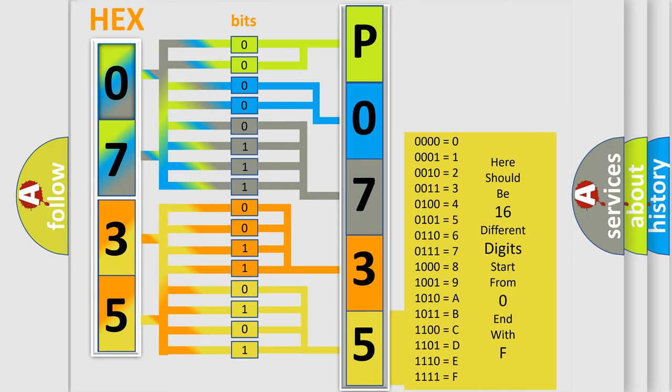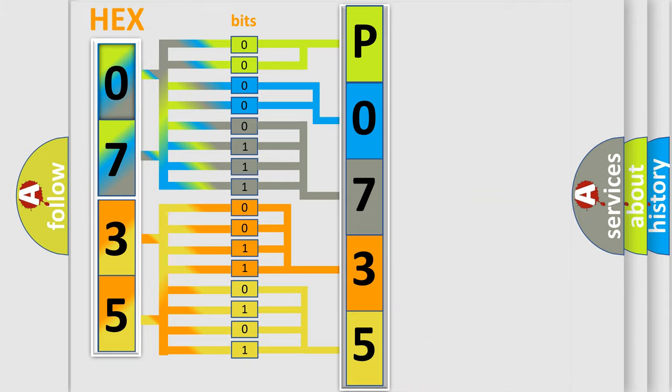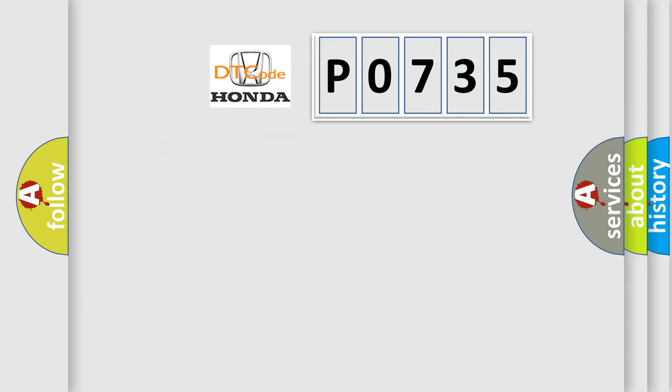We now know in what way the diagnostic tool translates the received information into a more comprehensible format. The number itself does not make sense to us if we cannot assign information about what it actually expresses. So, what does the diagnostic trouble code P0735 interpret specifically for Honda car manufacturers?